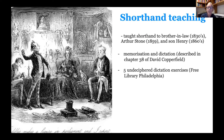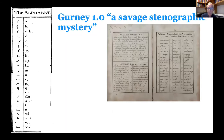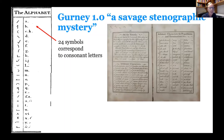Dickens called shorthand a 'savage stenographic mystery.' Why was it savage? First, the amount you had to memorize: you had 24 symbols corresponding to consonant letters. Then you had the 'arbitrary characters' — 74 of them which learners were forced to learn — grammatical words, suffixes, prefixes, and many legal words not particularly useful. If you think we only have 26 letters in our alphabet, here you've got 98 to memorize. We can see how the system works by looking at our pre-symposium task: given two strings of symbols, you were asked to construct a Dickens novel title from them.